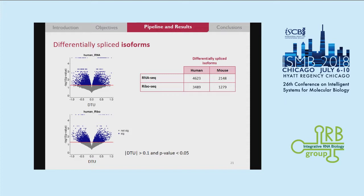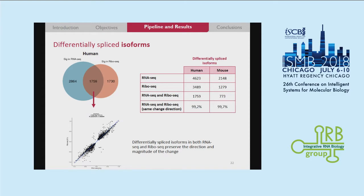I'm going to explain first the results for differentially spliced isoforms. We did the analysis separately for RNA-seq and ribo-seq, and here I'm showing the difference in transcript usage against the p-value. What we are interested in is the overlap between these two. The overlap represents around 40% of the changes found in RNA-seq, and those changes found in both RNA-seq and ribo-seq preserve the direction and also the magnitude of the change, as you can see in this correlation of RNA-seq differential transcript usage versus ribo-seq.